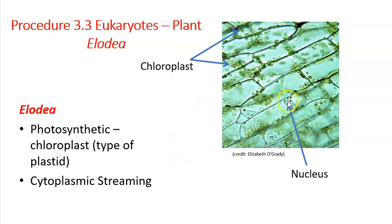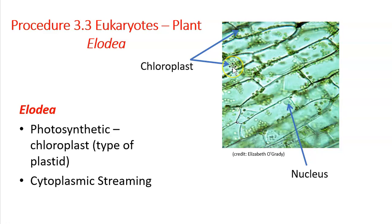We can see the nucleus. Remember that all cells are going to have DNA or genetic material. In this eukaryotic plant cell, that genetic material is housed within the nucleus. You also see these smaller green circles — these are a type of plastid, an organelle responsible for making or storing carbohydrates. These are chloroplasts, where the process of photosynthesis actually occurs in eukaryotic plant cells.